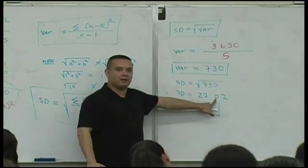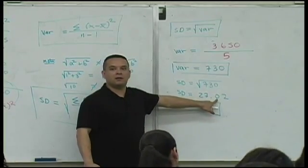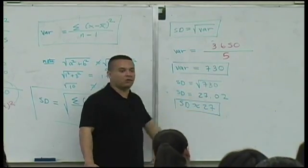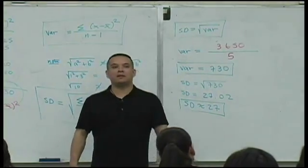Why is this 27 if we say approximately to the nearest tenth? That's a zero, right? Look to the digit to the right. What is that? Two. What does that mean? Leave that zero alone. Do not add one to it. The standard deviation is approximately 27.